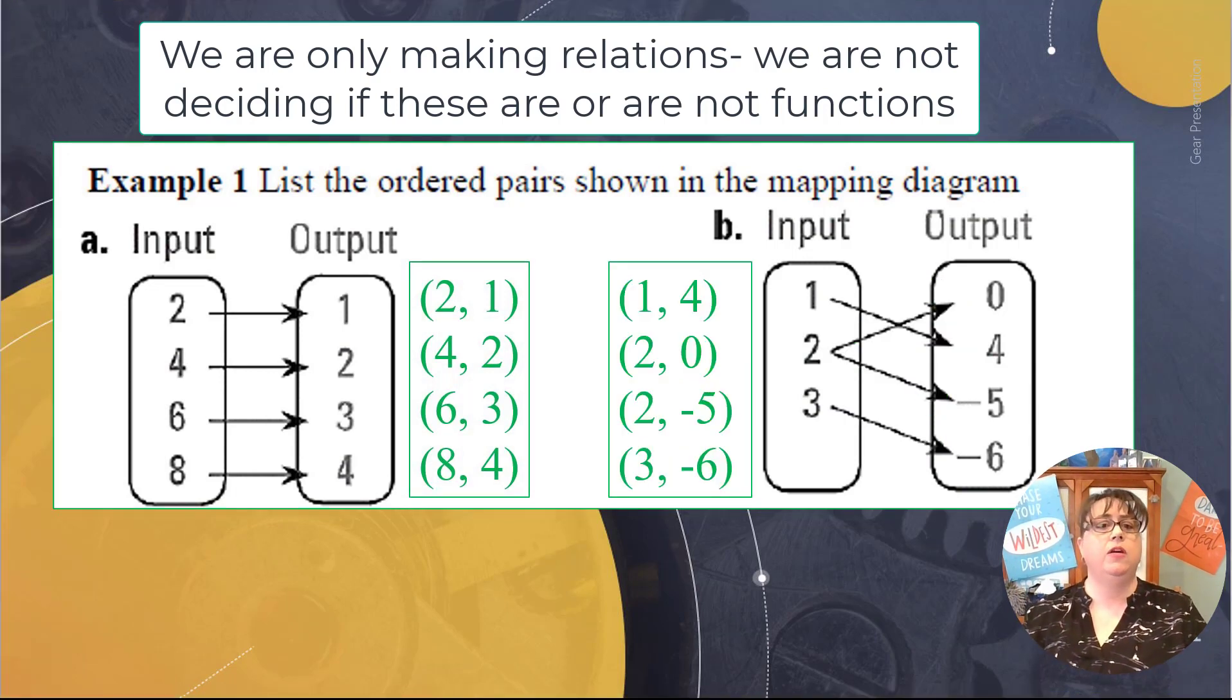So what we're looking at here is just how do you change a mapping diagram into ordered pairs. We're not looking at functions. We're just understanding how they work together.